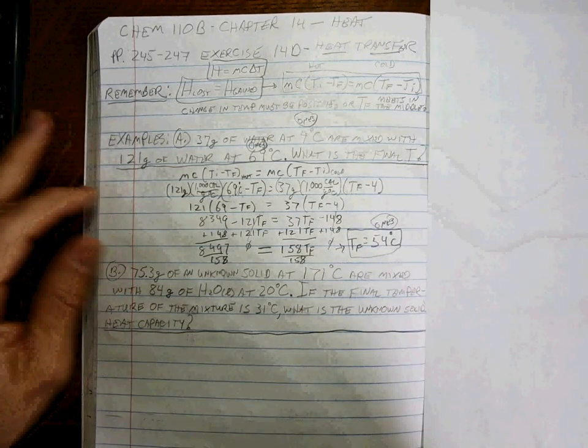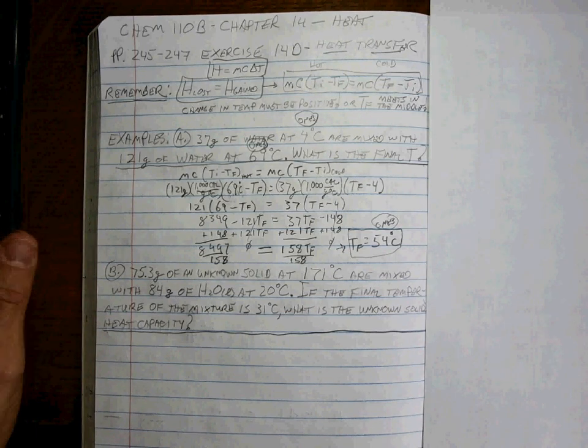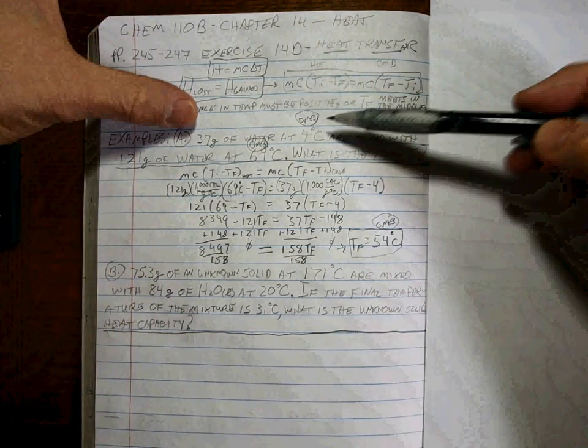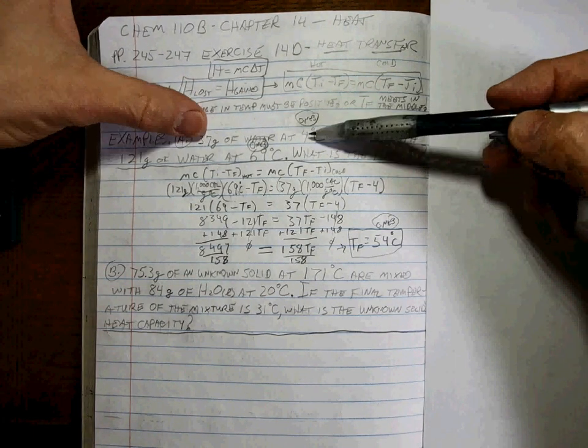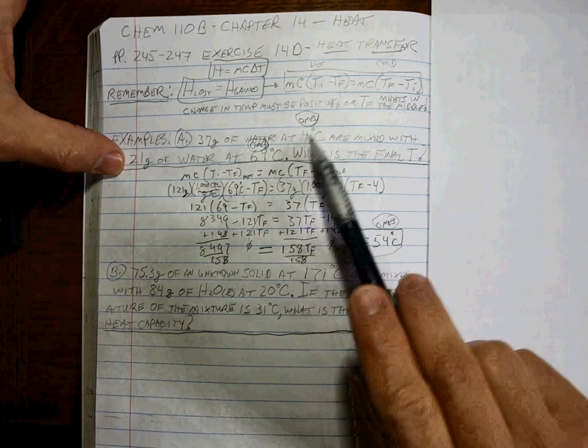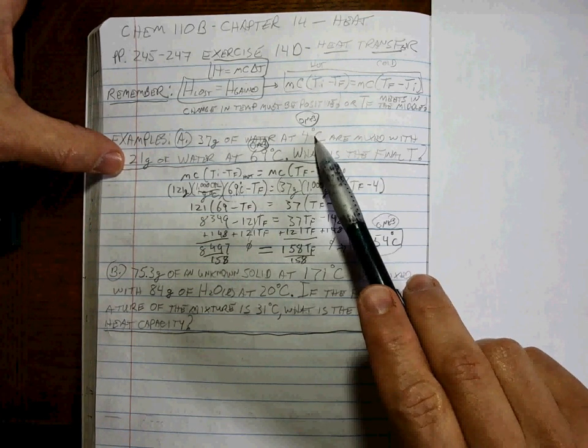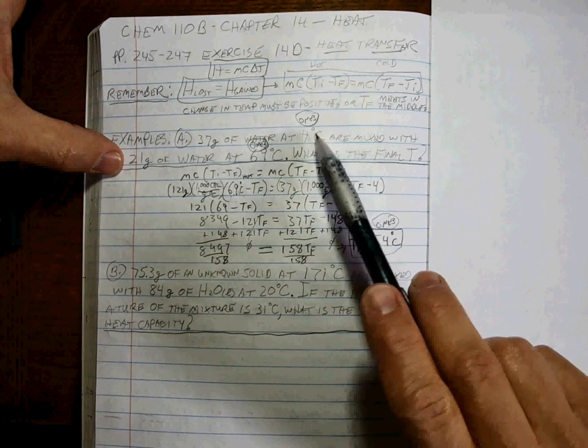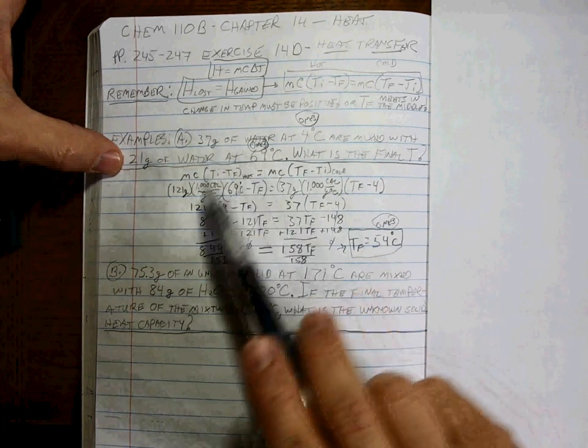And before we leave this problem, we should do a sanity check, see if it makes sense. We have a little bit of cold water added to a lot of hot water. So first off, the temperature has to be in between the two, right?